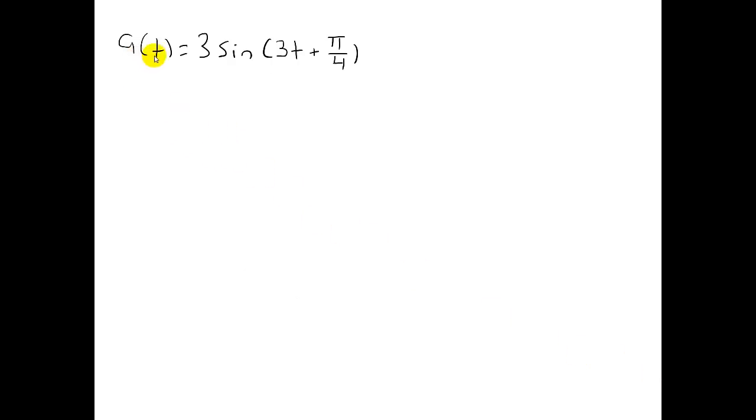In this example, A(t) equals 3 sine of 3t plus pi over 4. I can immediately write the phasor for this using the general form I showed previously.